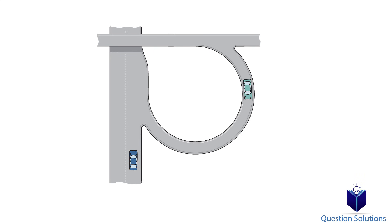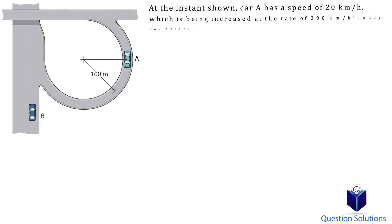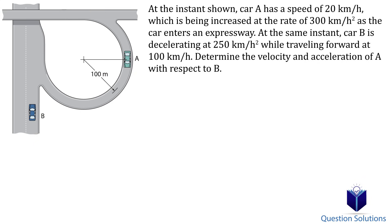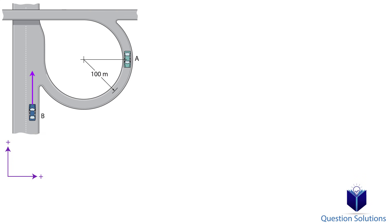Let's look at another example. In this question, we need to find the velocity and acceleration of car A with respect to car B. The first step is to establish which sides are positive, so we will pick up and to the right to be positive. Let's focus on car B first, since it's going in a straight line. We will write its velocity and acceleration in Cartesian vector form. For velocity, it's going to have one component, which is 100j. For acceleration, the question says it's decelerating at 250 kilometers per hour squared, so the acceleration component is actually facing down, which means it's negative 250j.